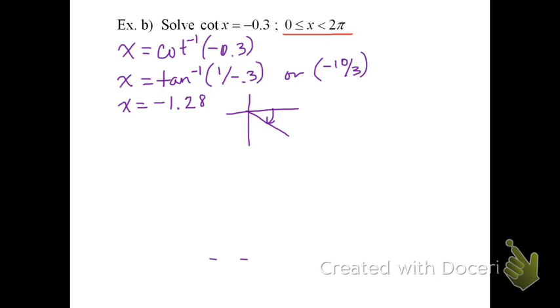And everybody's kind of always thrown off by this negative measure. Well, really, this negative angle of negative 1.28 really is the same thing as our reference angle if we take the absolute value of it. So our reference angle is just 1.28.